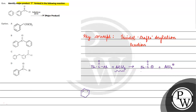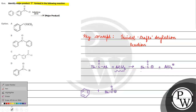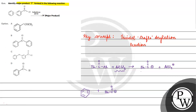The benzene ring undergoes a characteristic reaction — electrophilic substitution reaction. The electrophile performs an electrophilic substitution attack.